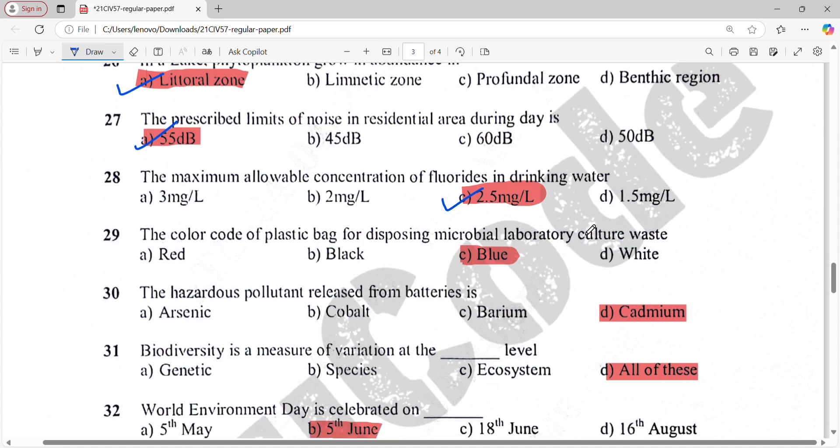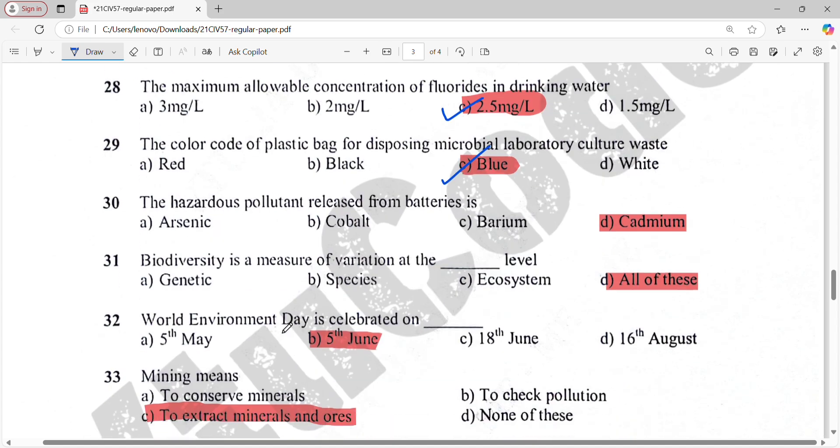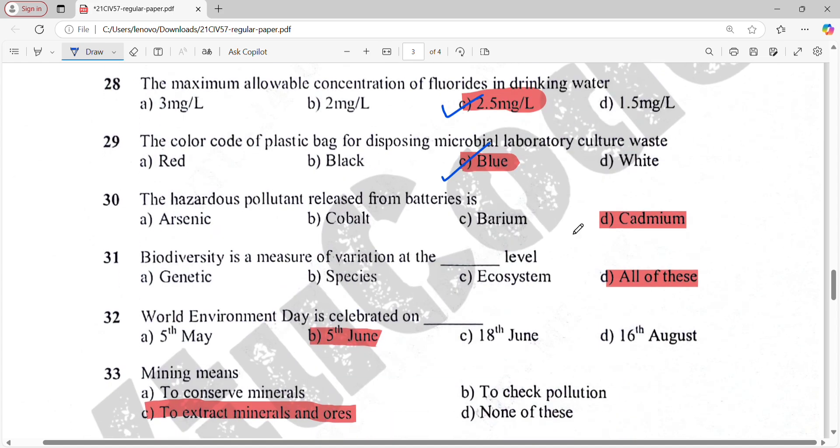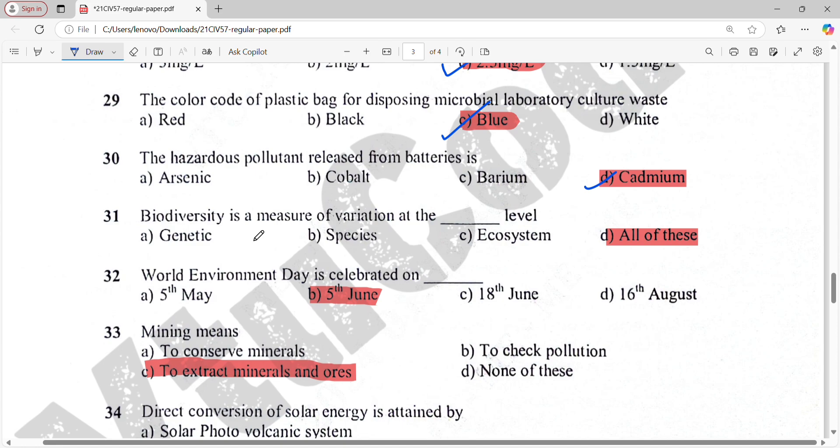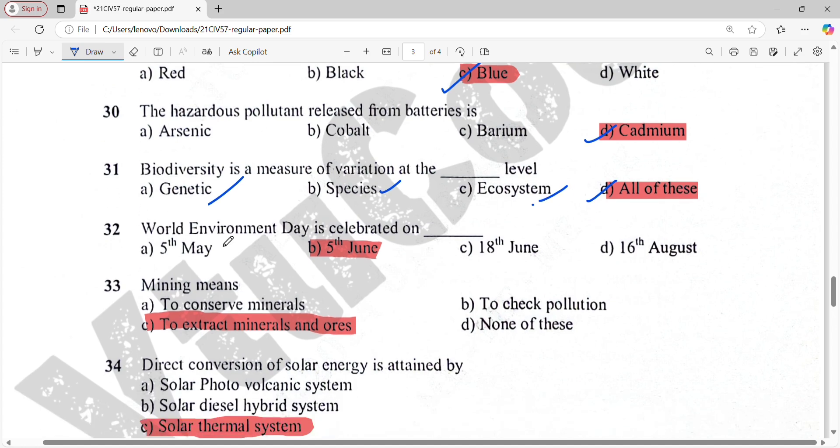The color code of plastic bag for decomposing microbial laboratory cultural waste is blue. The hazardous pollutant released from batteries is cadmium. Biodiversity is a measure of variation - all of these: genetic species and ecosystem. World Environment Day is celebrated on 5th June.